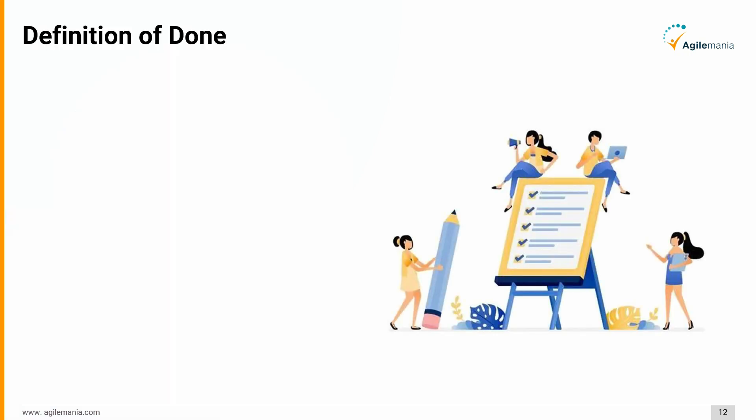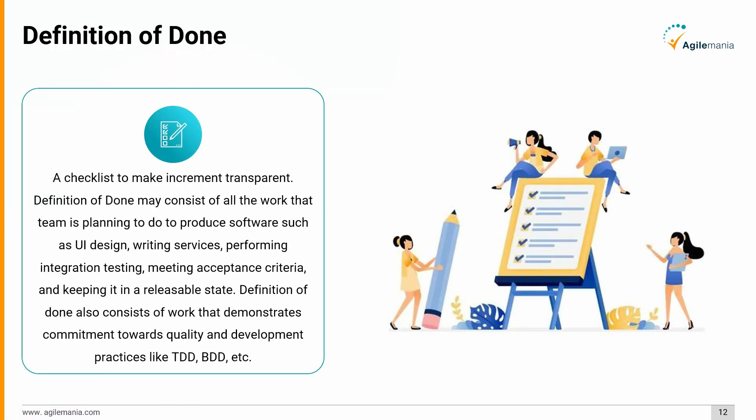Next, the definition of done — a checklist to make the increment transparent. Definition of done may consist of all the work the team plans to do to produce software, such as UI design, writing services, performing integration testing, meeting acceptance criteria, and keeping it in a releasable state. It also consists of work that demonstrates commitment towards quality and development practices like TDD, BDD, etc.